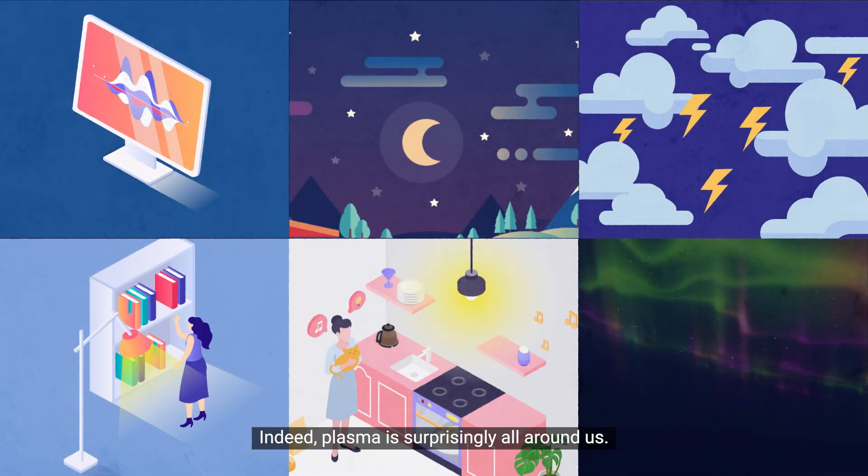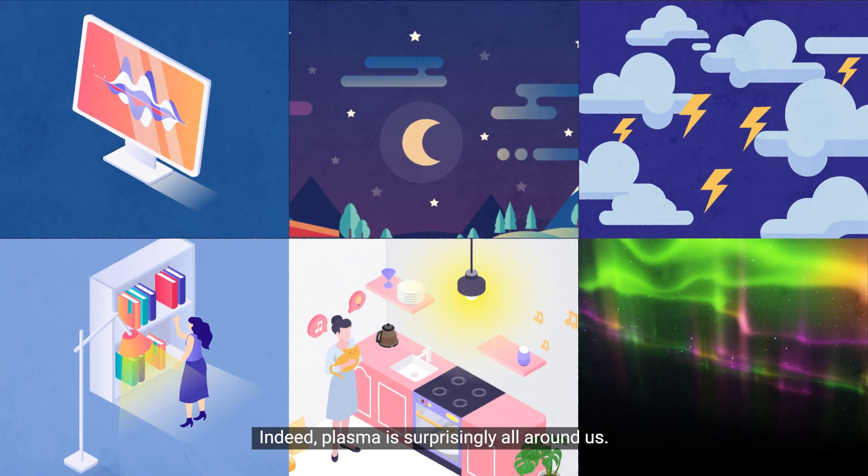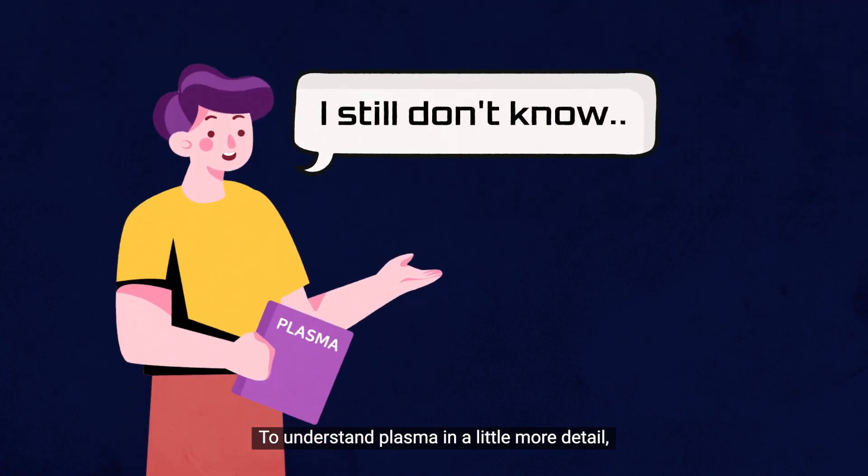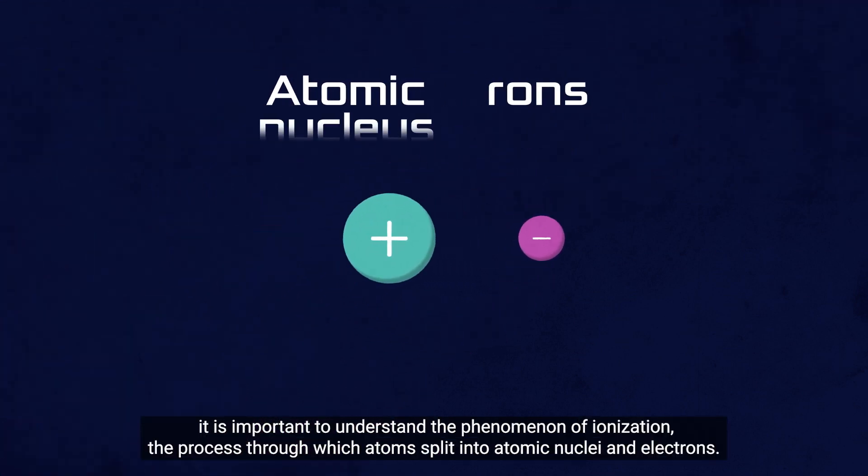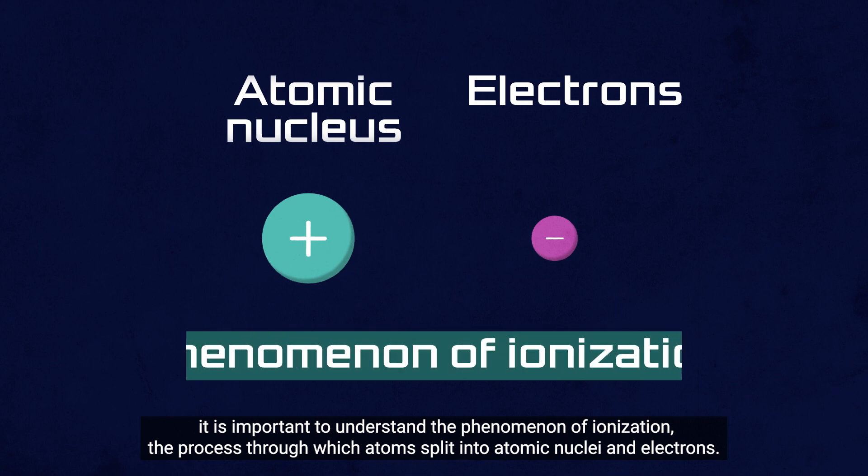Indeed, plasma is surprisingly all around us. To understand plasma in a little more detail, it is important to understand the phenomenon of ionization, the process through which atoms split into atomic nuclei and electrons.